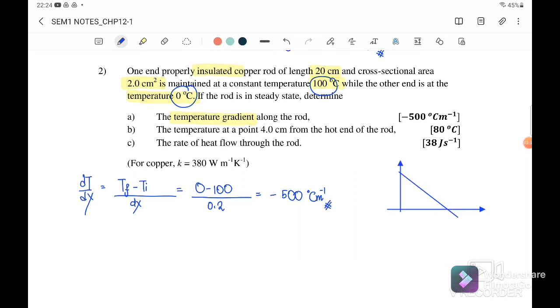If we sketch the graph of temperature versus thickness, here is 100°C and this is 0°C, and this is the temperature gradient which equals negative 500°C per meter. Because the question mentioned it is isolated, we will get a linear graph.